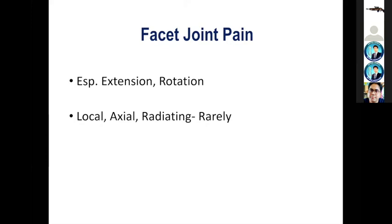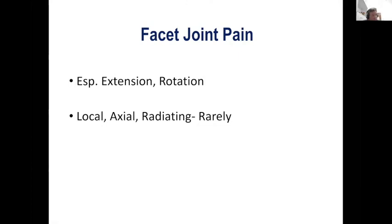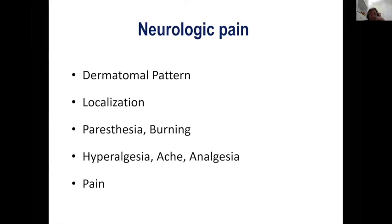Facet joints by themselves can cause pain, especially if the patient's pain is accentuated with extension and rotation. The kind of pain facet joints cause is by and large local and axial — it is not typically radiating. The neurologic pain caused by nerve root involvement is more or less in a dermatomal pattern. So if a patient complains of pain in a particular distribution of a nerve root — a dermatomal pattern — then it's more likely to be a neurologic pain rather than pain localized to some other structure.